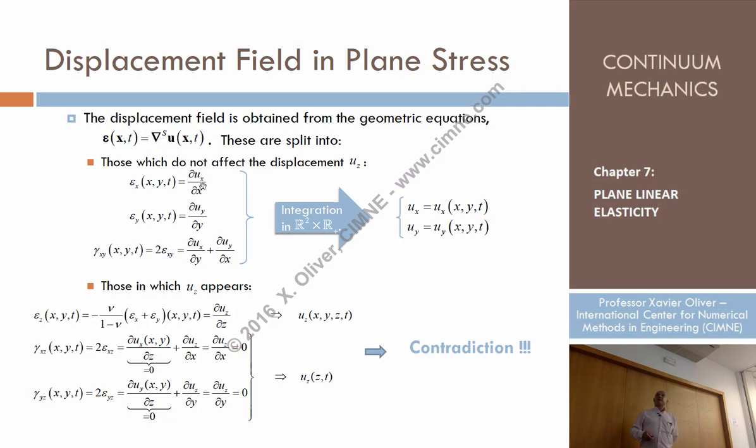The strain epsilon x, the derivative of ux with respect to x, epsilon y is that, gamma xy is that. This is a system that can be integrated and then we can obtain the displacements. The displacements as a function of what? Well, if the data is function of x, y and t only, the displacement x and y is a function of x, y and t only.